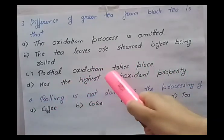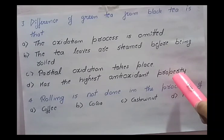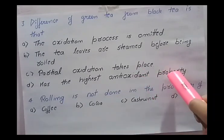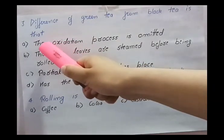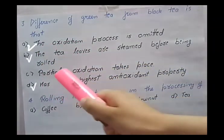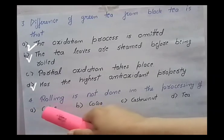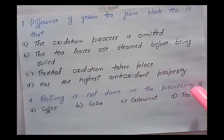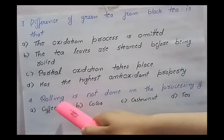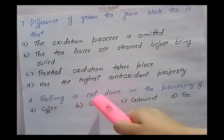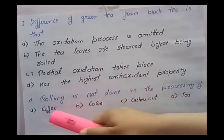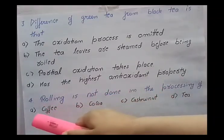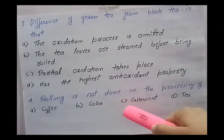Has the highest antioxidant property — yes, green tea has the highest antioxidant property. So the right options are first, second, and fourth. Moving to the next question: rolling is not done in the processing of — this is a simple question. Rolling is basically done in the processing of tea, so the right options are coffee, cocoa, and cashew nut.